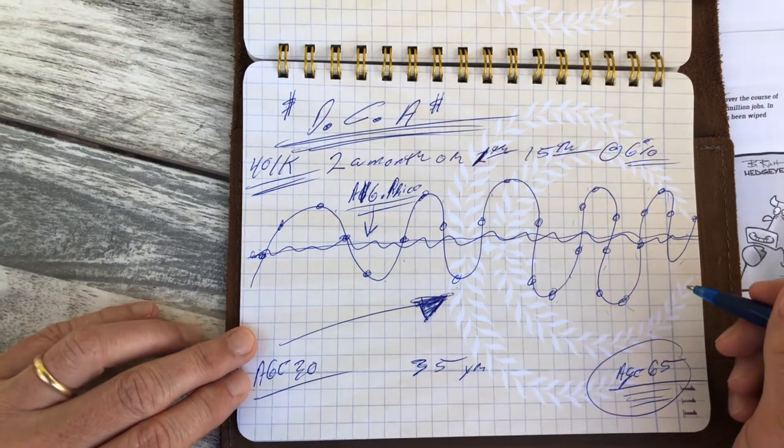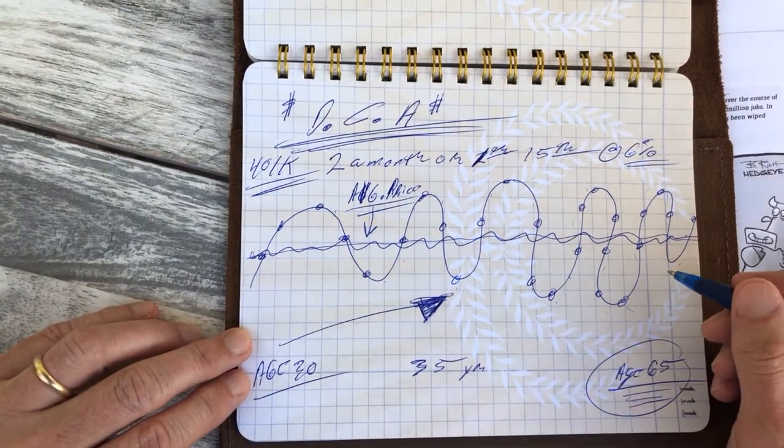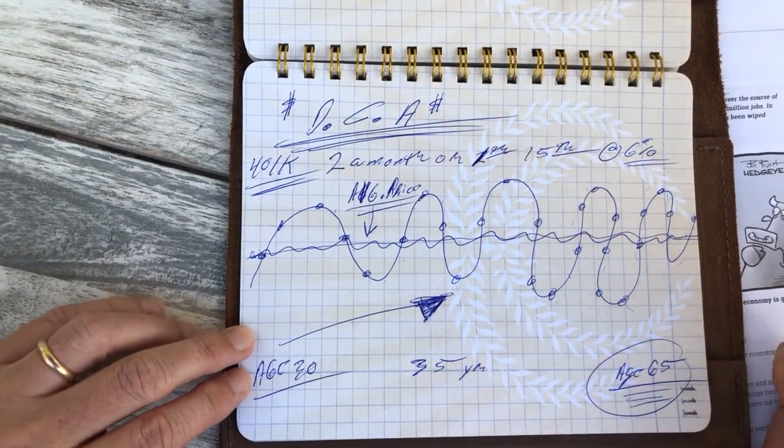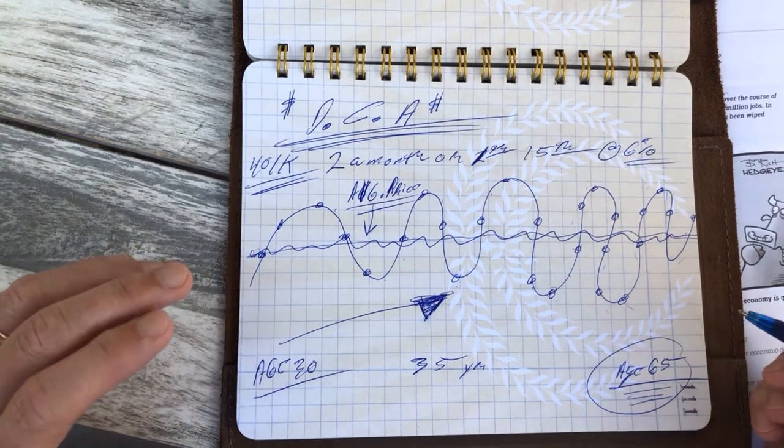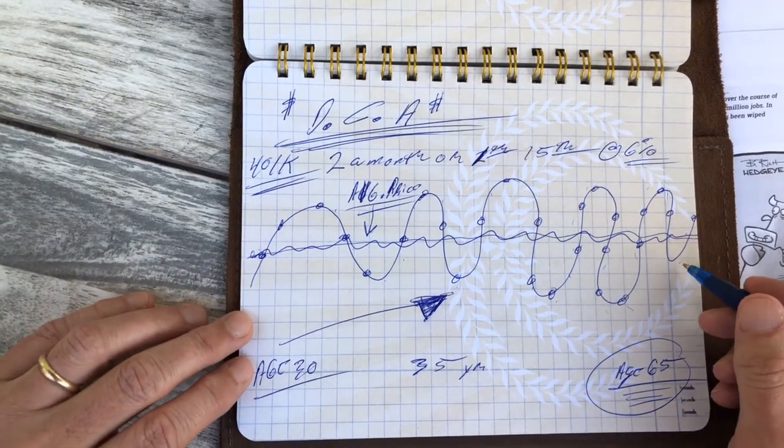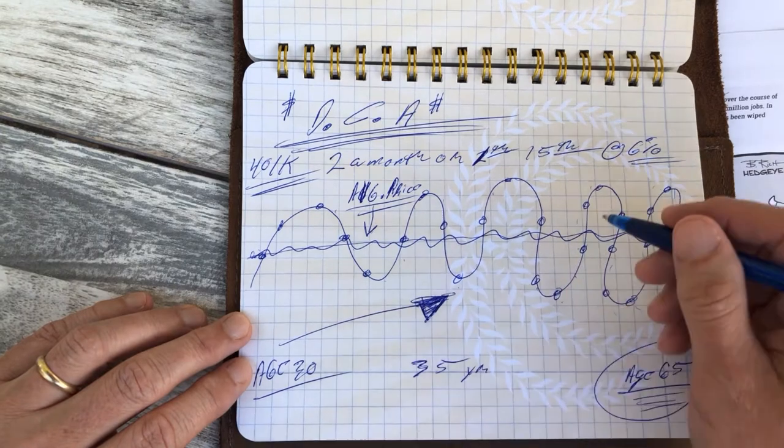When we're in market conditions like we are now, where we're seeing markets sell off in double digit levels, this is your buying opportunity to buy at lower prices.